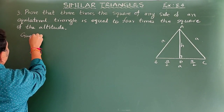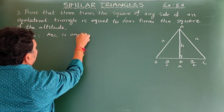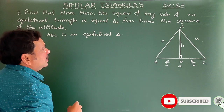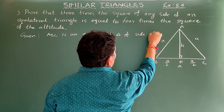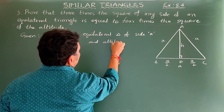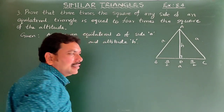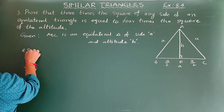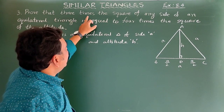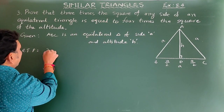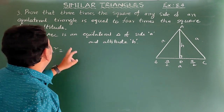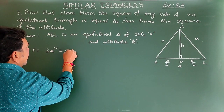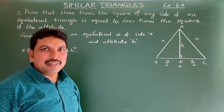Given: ABC is an equilateral triangle of side A and altitude H. RTP: Three times the square of any side equals four times the square of the altitude, i.e., 3A² = 4H².